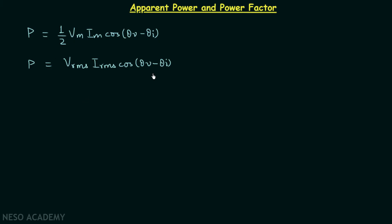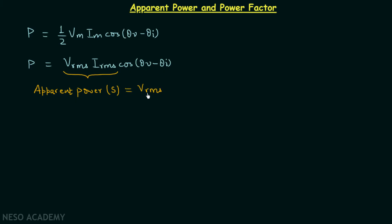Now I want you to focus on the second formula. When you focus on it you will find that here we are multiplying voltage and current, and we know when voltage is multiplied by current we have power. So it is apparent that this term is going to be a power. We call it apparent power, represented by uppercase S, and it is equal to the RMS value of voltage multiplied by the RMS value of current.